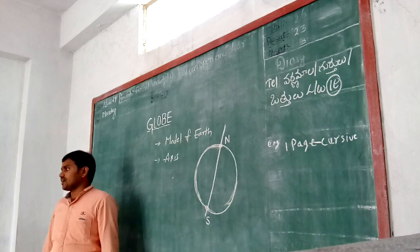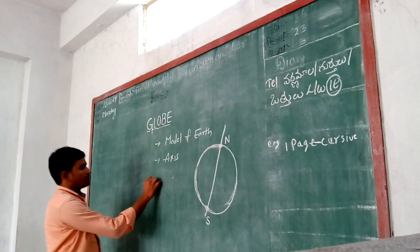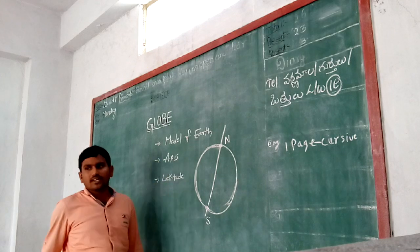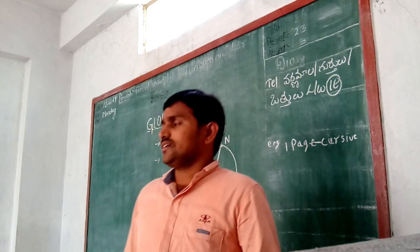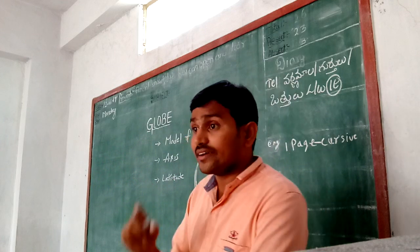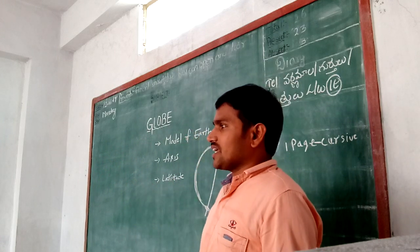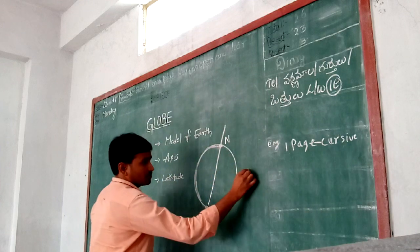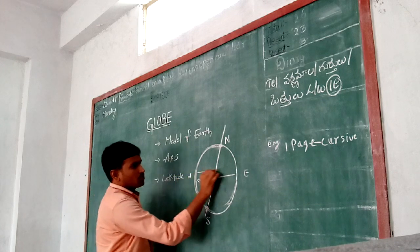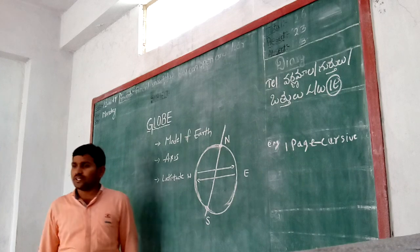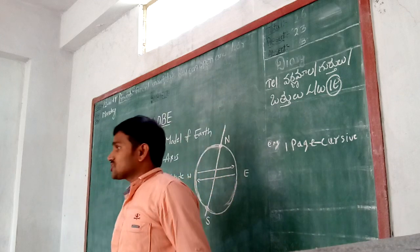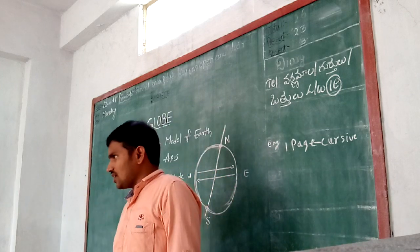Next, latitudes. What is a latitude? Latitude means an imaginary line which runs from east to west, or west to east. An imaginary line which runs from east to west or west to east is called a latitude.